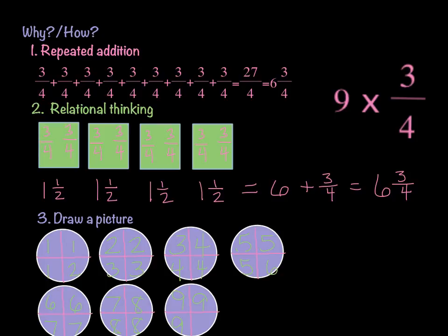Basically, that means 27 divided by 4, which happens to be 6. That's where this whole number comes in, and I have a remainder of 3. So, my mixed number becomes 6 and 3 fourths.